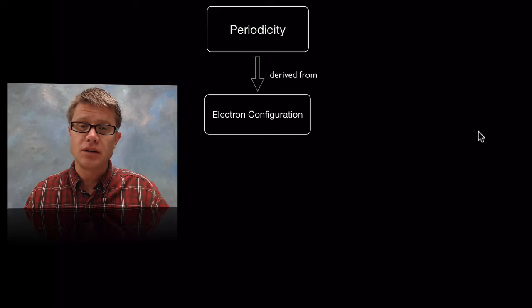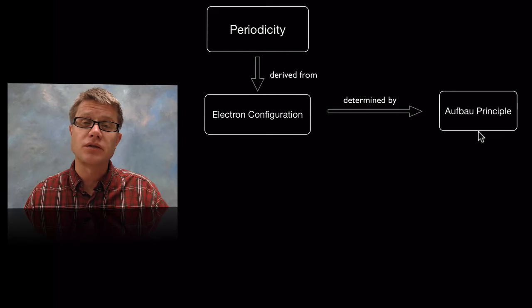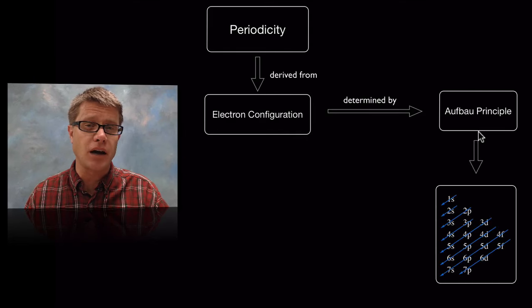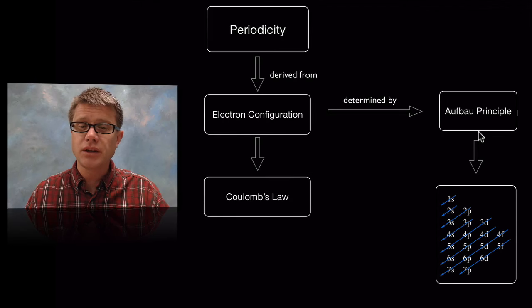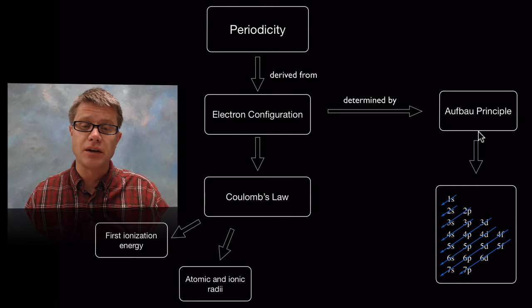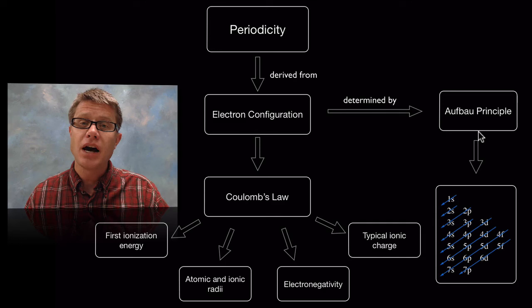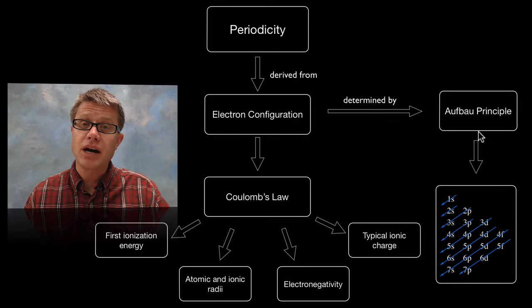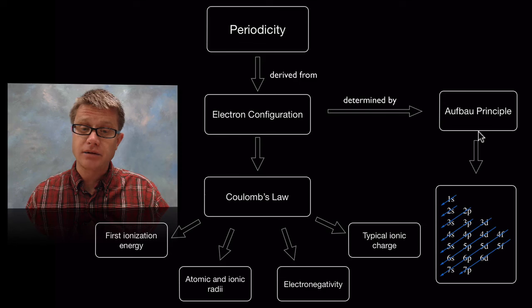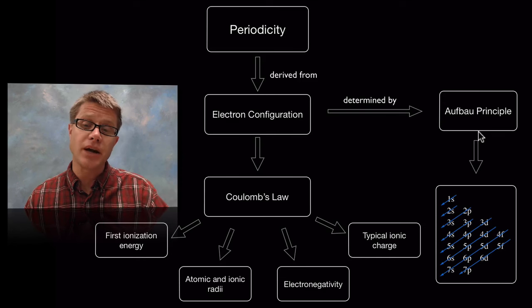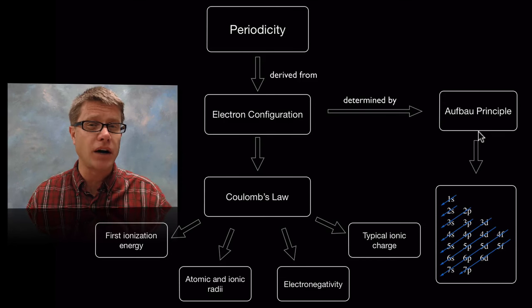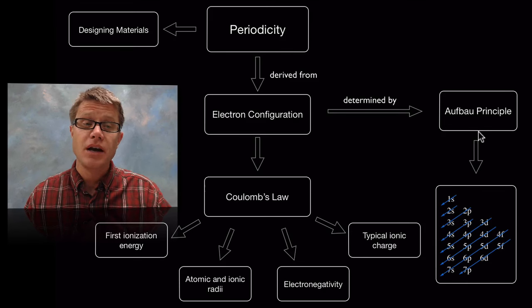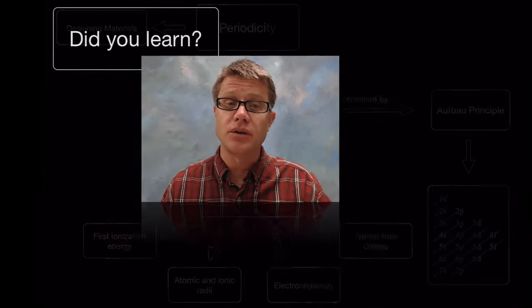And so in summary, periodicity comes from the electron configuration which is determined by the Aufbau principle. But what really explains it is Coulomb's law, which allows us to make these big predictions. Ionization goes up and to the right. Atomic radii increases down and to the left. Electronegativity up and to the right. And then ionic charge—remember we find where the noble gases are, and then we look at how many electrons we have to gain or lose to get there. And then these are important in designing materials.